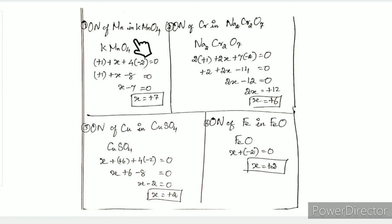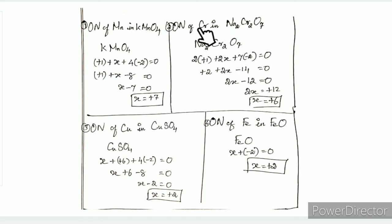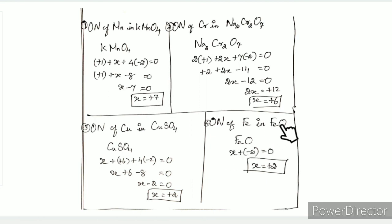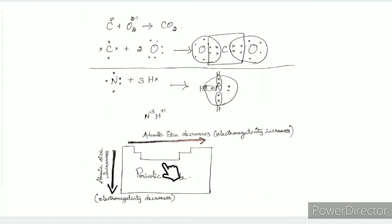For potassium permanganate KMnO4: potassium is +1 and oxygen is -2. For sodium chromate Na2CrO4: sodium is +1, oxygen is -2, chromium is +6. For copper sulfate CuSO4: sulfur is +6 and oxygen is -2, so the copper oxidation number is +2. For ferrous oxide FeO: oxygen is -2, so iron oxidation number is +2.